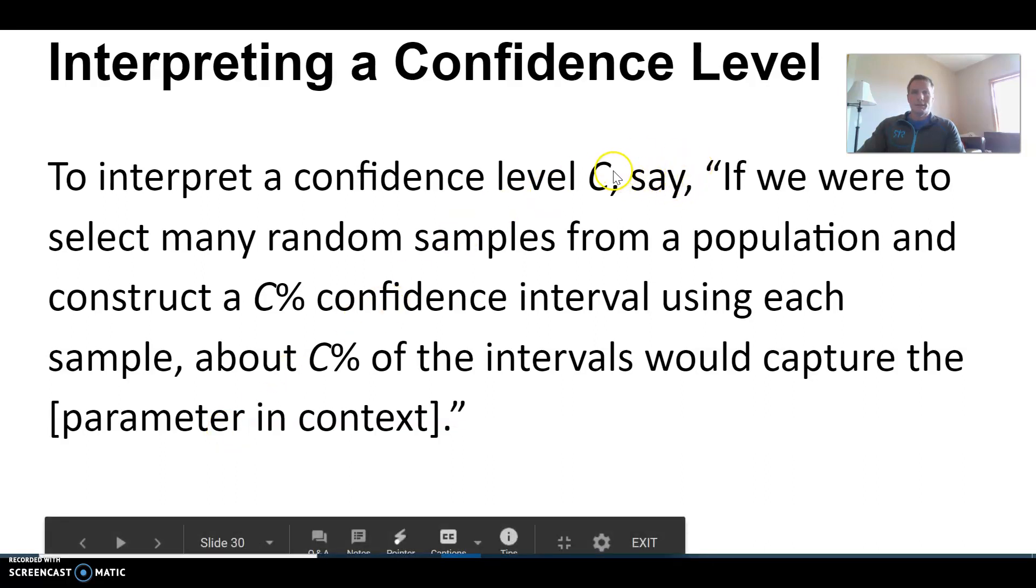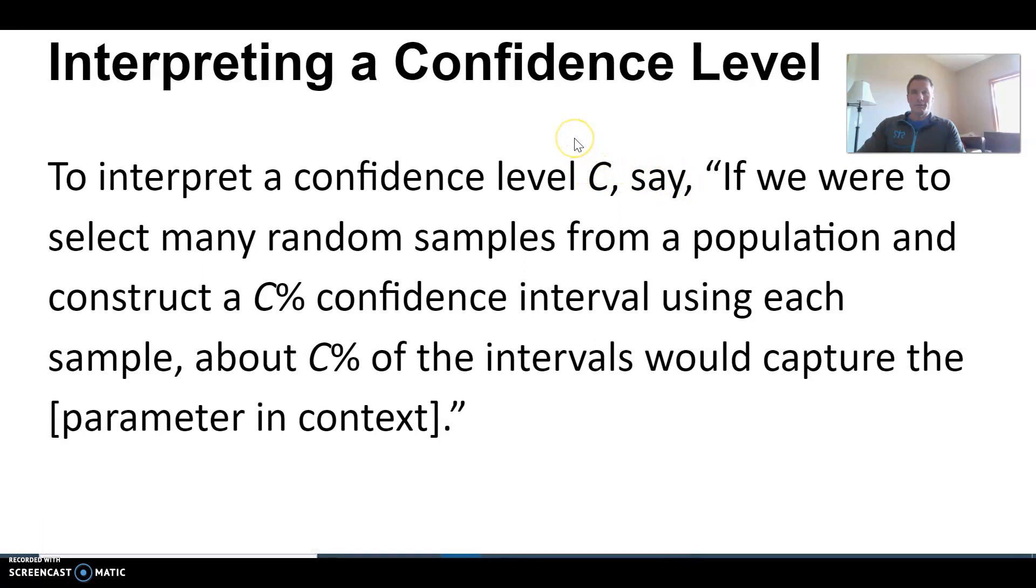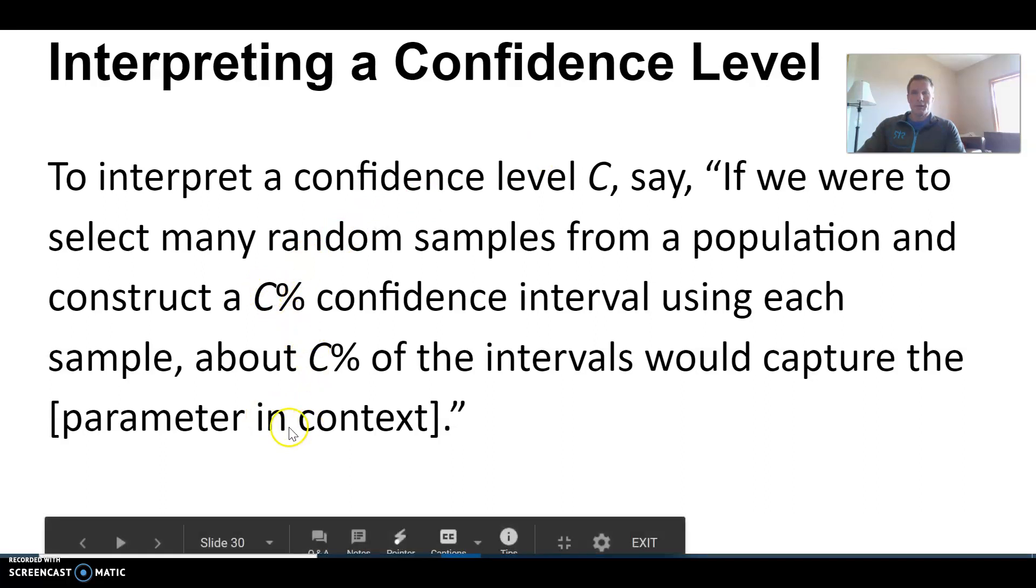So in this case, if I had a 95% confidence interval, I would just replace C with 95% each time and add some context, and I would be interpreting the confidence level of 95%.